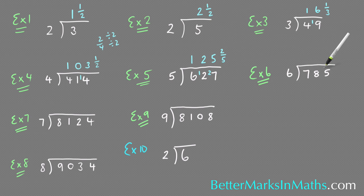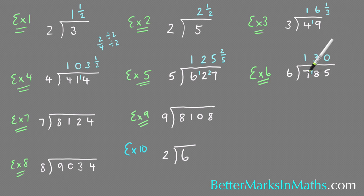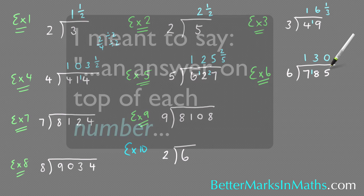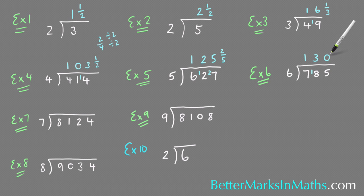How many 6s in 785? How many 6s in 7? There's 1 with 1 left over. How many 6s in 5? There's none, so you've got to put a 0 there. Once you've got an answer over a number, there should be an answer over every number until you get to the last number in the sum. A lot of students leave this 0 out and go '13 remainder 5', but you've got to have an answer on top of every digit. So how many 6s in 5? The answer is 0, and because you haven't used that 5, it's going to be the remainder — as a fraction, that's 5 over 6.